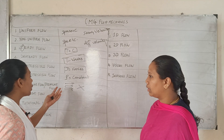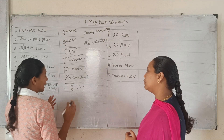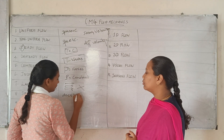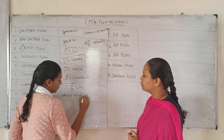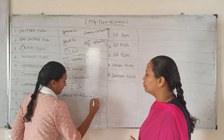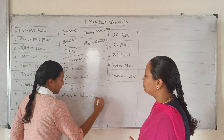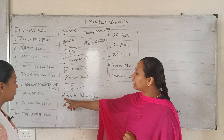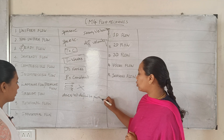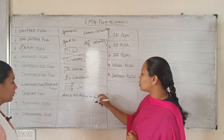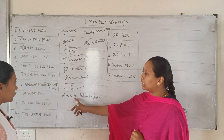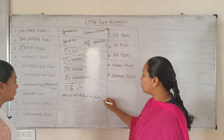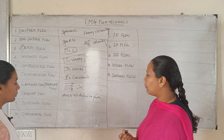Turbulent flow is the opposite. It does not have a definite path. The path is intersected and the paths cross each other.